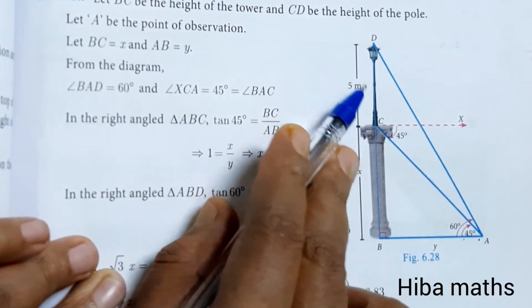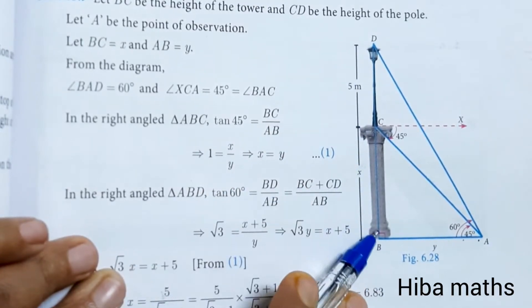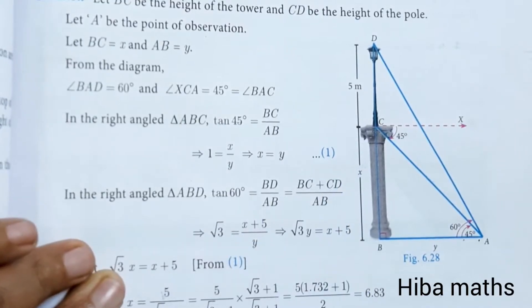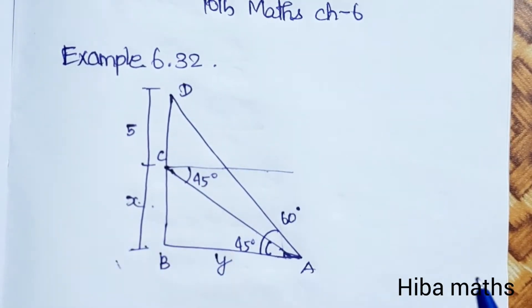On top of the tower, find the height of the tower. We will set up the diagram and put x as the height variable, using tan theta for our calculations.